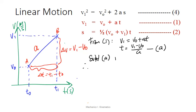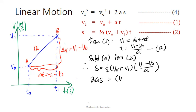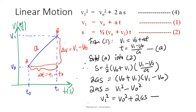Substitute equation a into equation 2. We will have s equals half V0 plus V1 times T, which is V1 minus V0 over a. Let's bring the 2 and the a over: 2as equals V0 plus V1 times V1 minus V0. Simplifying, we will get V1 square minus V0 square. And rearranging it, we will have V1 square equals V0 square plus 2as. And that's equation 4 for you.